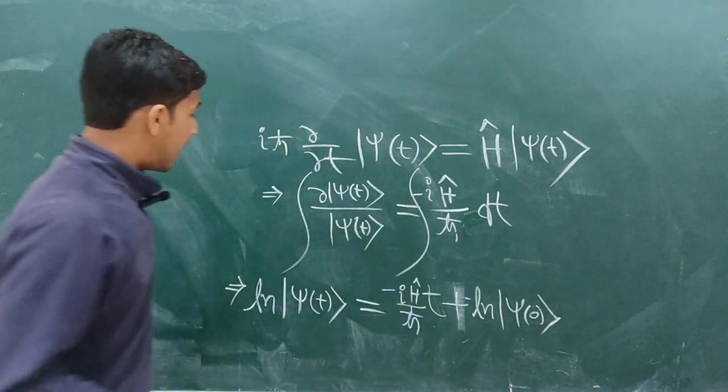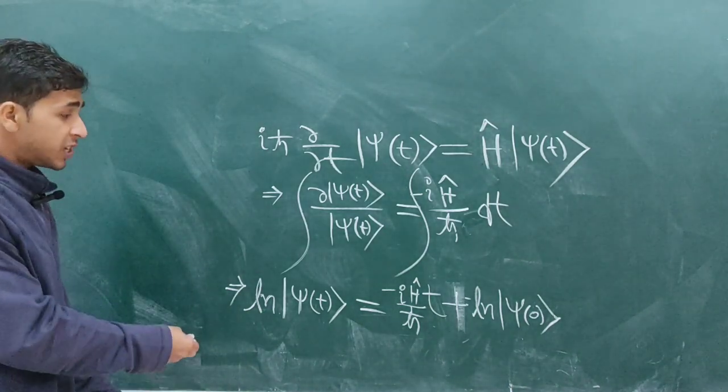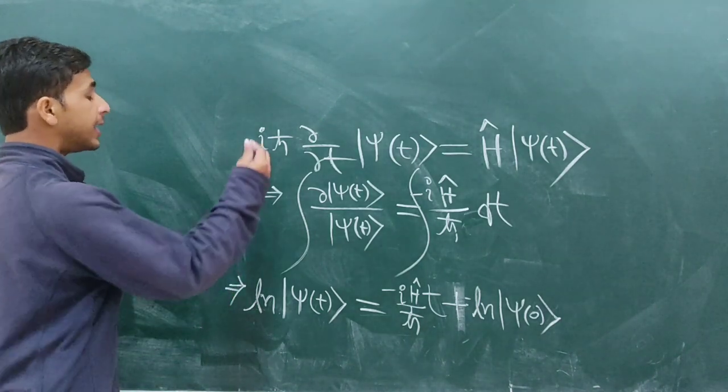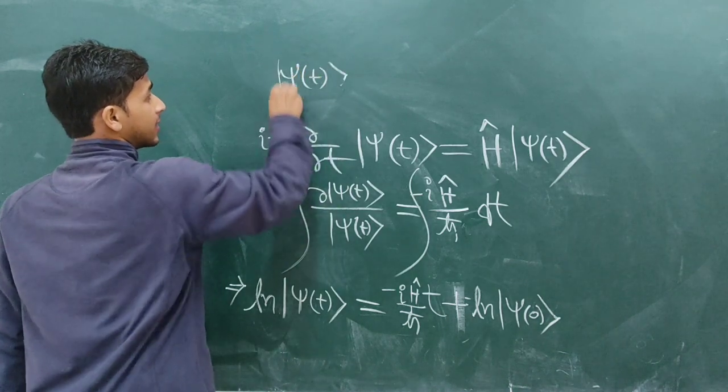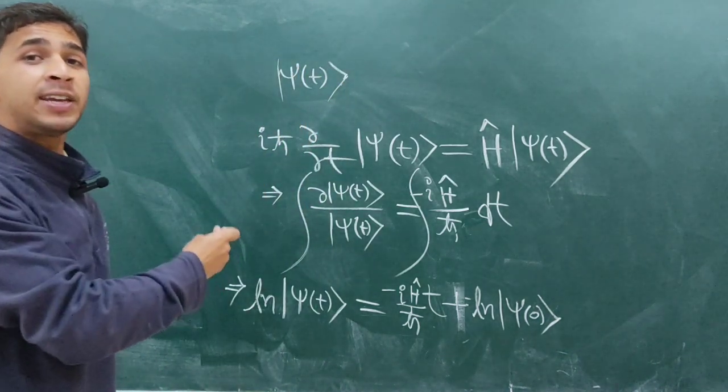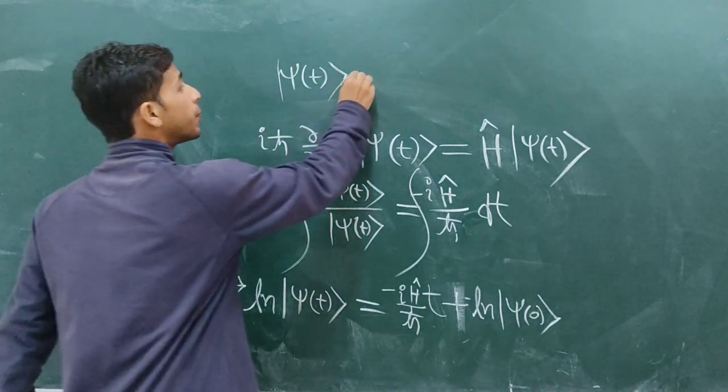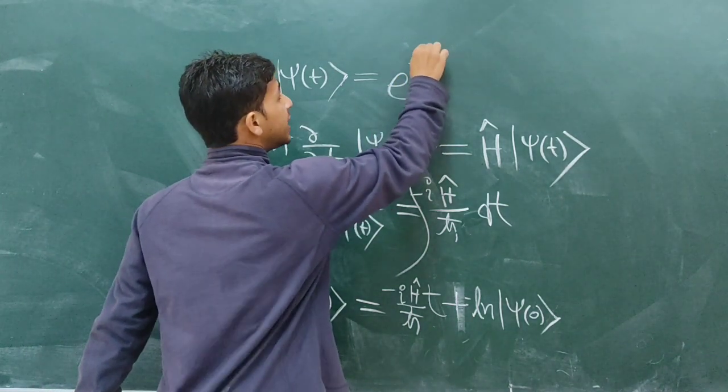So that's all, and after you take an exponential term on both hand sides, you will get the final result that is ψ(t), the state which is describing the quantum mechanical system.